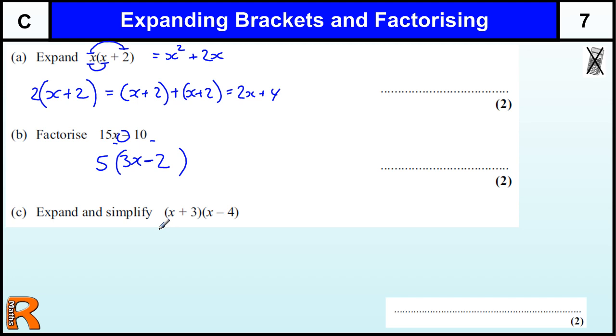Part C, expand and simplify a double bracket. This is where algebra actually starts to come in to be a little bit tricky. Now I'll show you two ways of doing this. One you might be familiar with if you use a grid method for multiplication. And if I just separate the two brackets out so I've got x plus 3 on the top, x minus 4 on the side, doesn't matter which side,